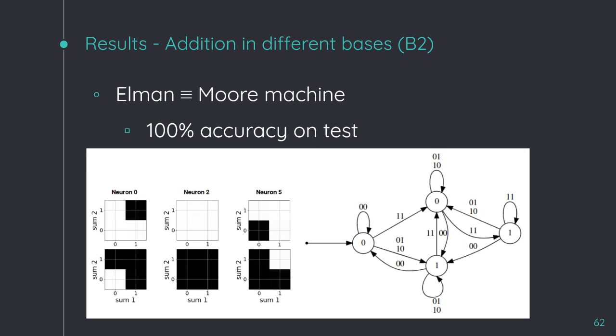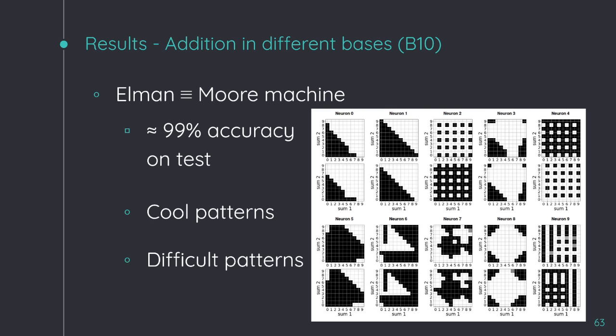But, what happens when we increase the base? This is an example of an Elman network when it is trained on the addition problem in base 10. This time, the network doesn't reach 100% of accuracy, it is around 99%, and here you have its activation patterns. This time, even if the patterns are cool, they are completely difficult to follow, so we cannot understand what is going on here.